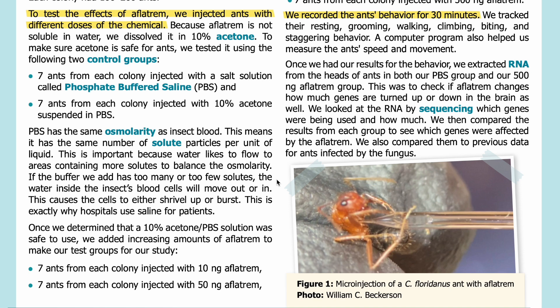This is important because water likes to flow to areas containing more solutes to balance the osmolarity. If the buffer we add has too many or too few solutes, the water inside the insect's blood cells will move out or in, causing the cells to either shrivel up or burst. This is exactly why hospitals use saline for patients. Once we determined that a 10 percent acetone PBS solution was safe to use, we added increasing amounts of aflatrem to make our test groups.